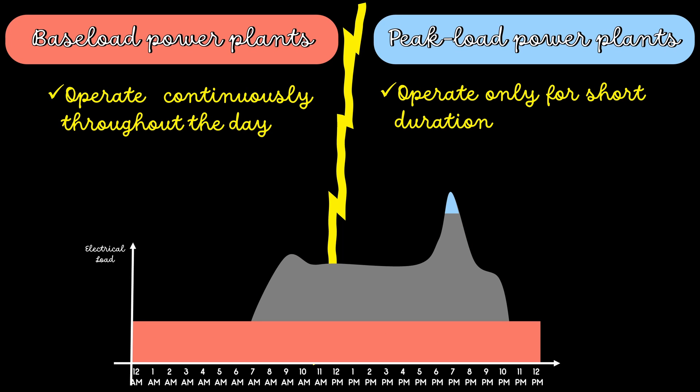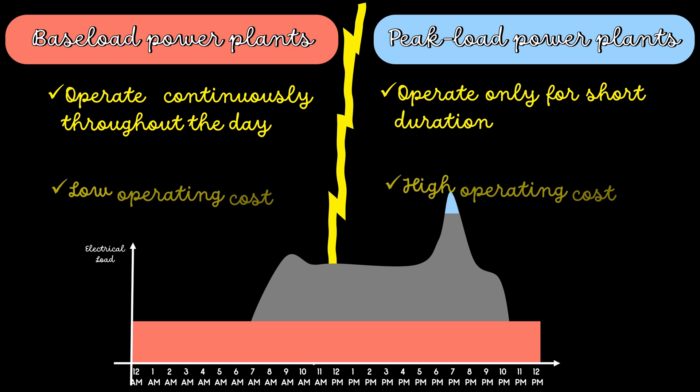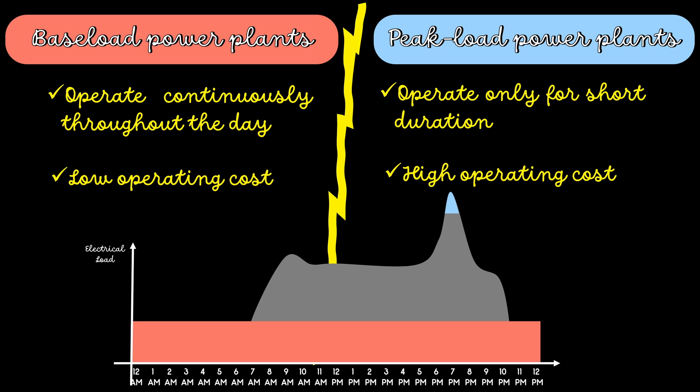Since base load power plants should operate continuously, power plants with low operating costs should be used as base load plants. Natural gas and diesel power plants cannot be used as base load plants as they are expensive to operate.